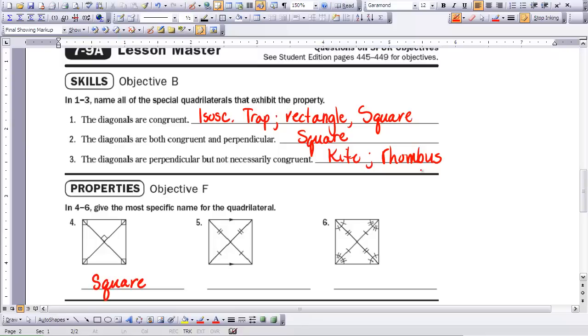Look at number five. We have one set of parallel sides, so that would be a trapezoid. But we know that the diagonals intersect each other and that this part and this part are congruent in these two. So the only one that would meet that would be the isosceles trapezoid.